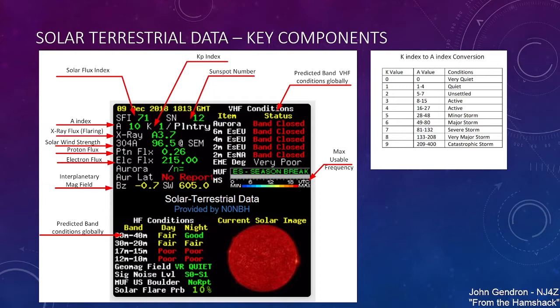The solar flux index is solar RF noise at 2,800 megahertz, closely related to the amount of ionization in the F2 layer of the ionosphere. It ranges between 50 and 300. But as SFI increases, D-layer absorption and noise can increase as well. So some numbers are better for the low bands, and some numbers are better for the high bands.